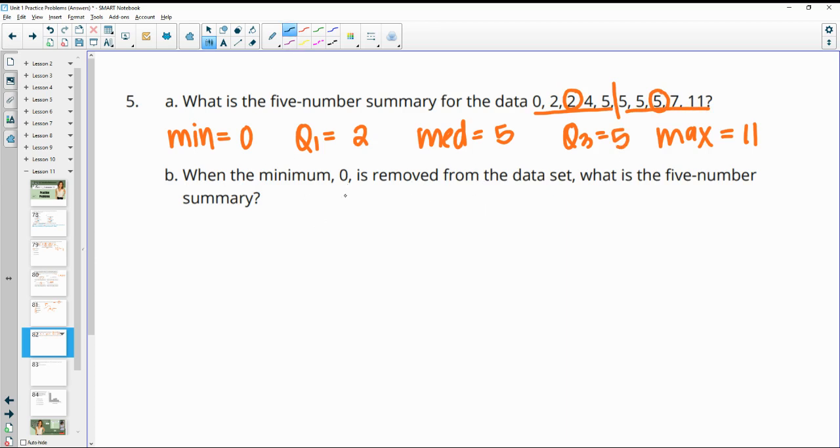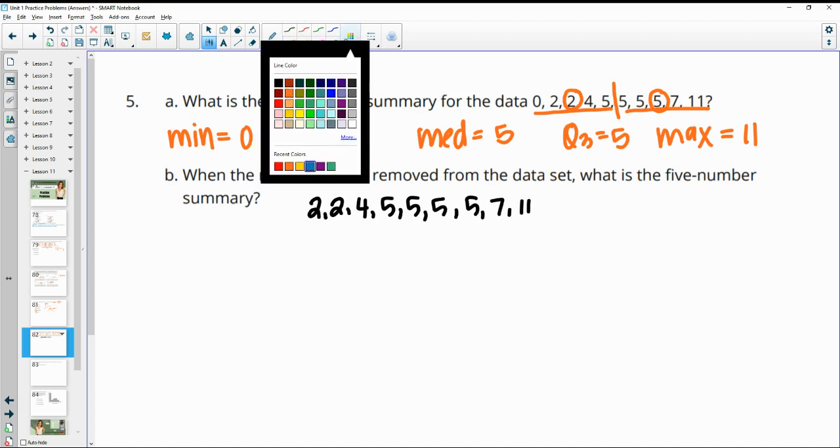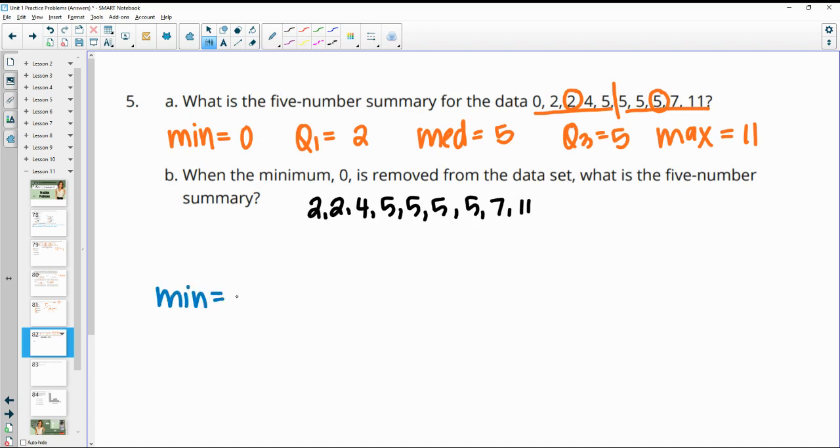When we remove the zero, what's the five-number summary? So I'm just going to write down the other values so that I can write on them and show you. So we had two, two, four, four fives, a seven, and an 11. So our minimum now is two. We'll look for that Q1, the median, Q3, and the maximum. And the maximum is 11. So when we go here, now our median is an exact value here, right? This five is the very middle value, still the same as the top one.